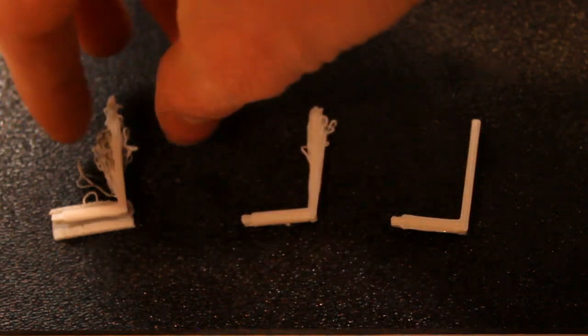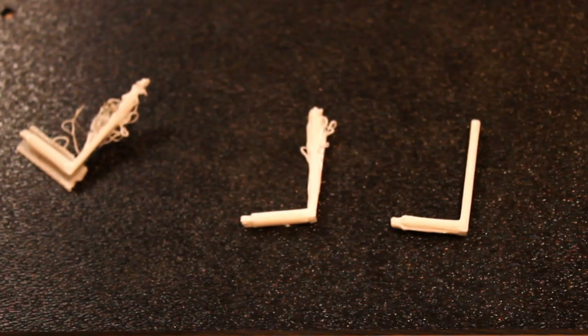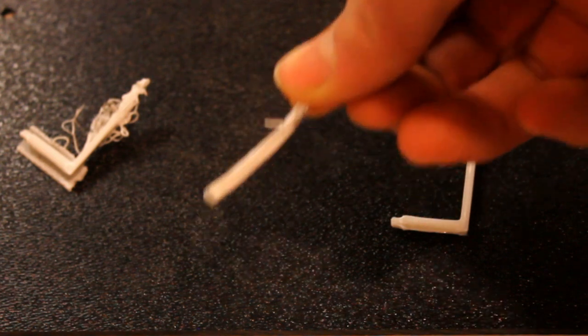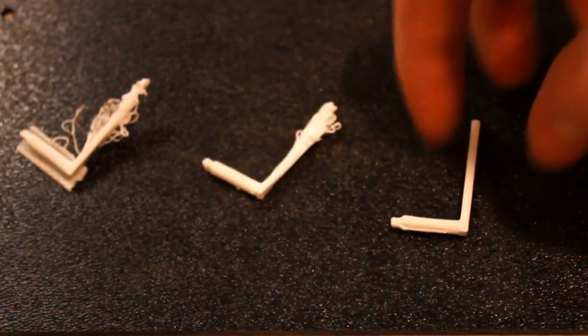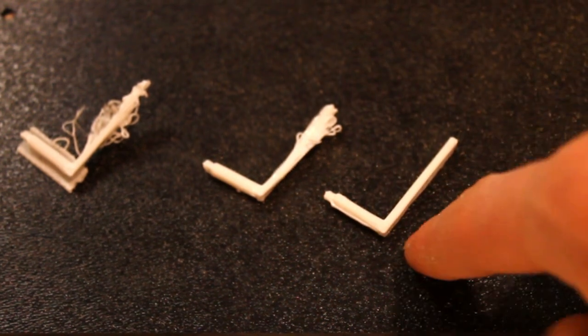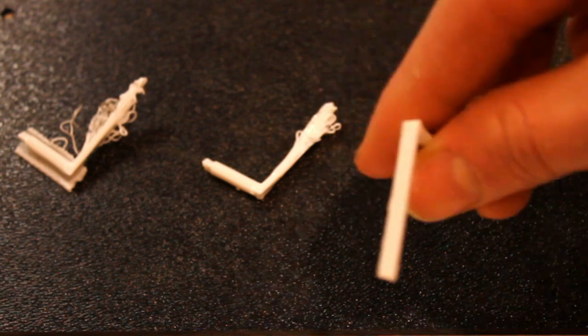For the VOR needles, I printed this one with the raft, but I didn't print with supports touching the base plate. With this one, I printed with no supports whatsoever. And then with this one, I printed with a raft and then base plate support. And I think this one out of the three turned out the best.